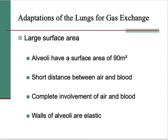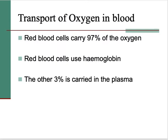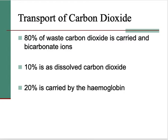The next section is about transport of oxygen in the blood, which goes back over what we already know: oxygen is carried in the red blood cells, bound to haemoglobin. Don't worry about the extra 3%. Carbon dioxide, as far as you're concerned, is transported in the blood plasma.